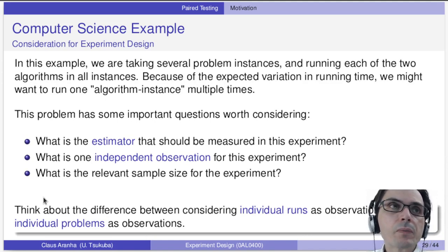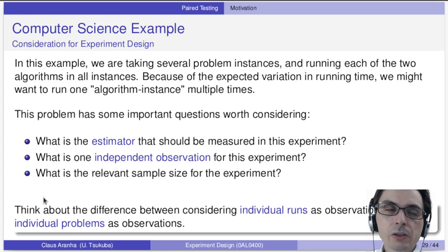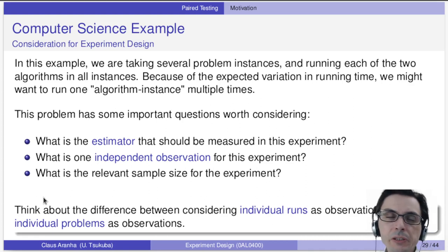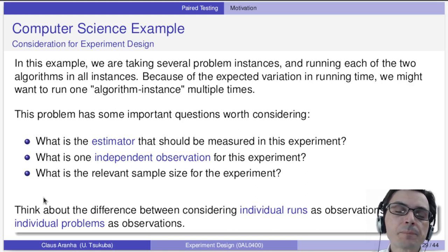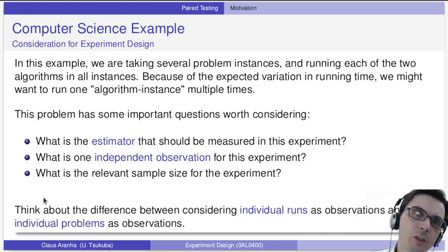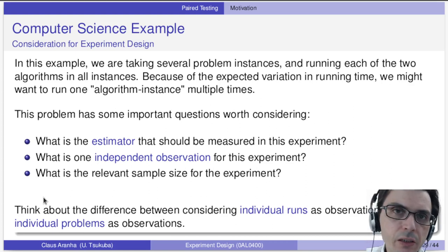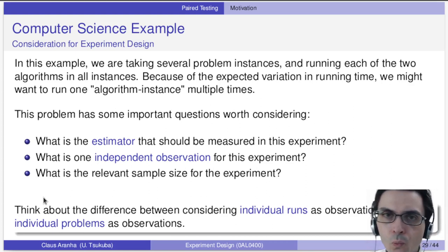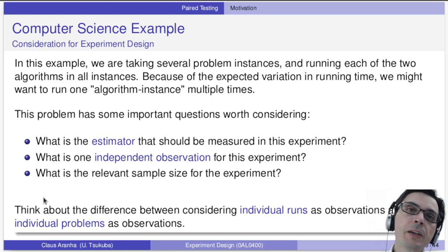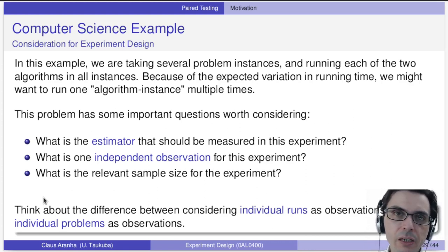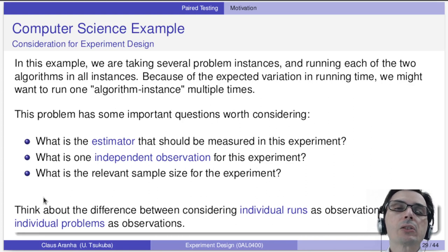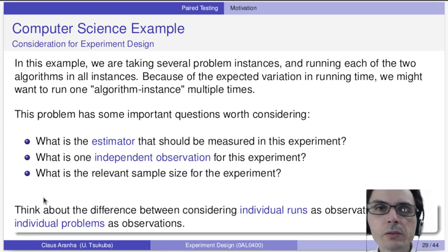In this example we take several problem instances and run each of the two algorithms on all instances. Because of expected variation in running time we might run each algorithm-instance pair multiple times. One observation is one repetition of one algorithm on one problem. Alternatively, if I run one algorithm on one problem many times, I can take the average of those runs and call that one observation.